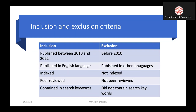We can have inclusion criteria like published in English language, though some researchers may consider other languages as well. Another criterion is whether the journal is indexed or not. It is better to take articles from indexed journals, as indexed journals should maintain a quality standard.